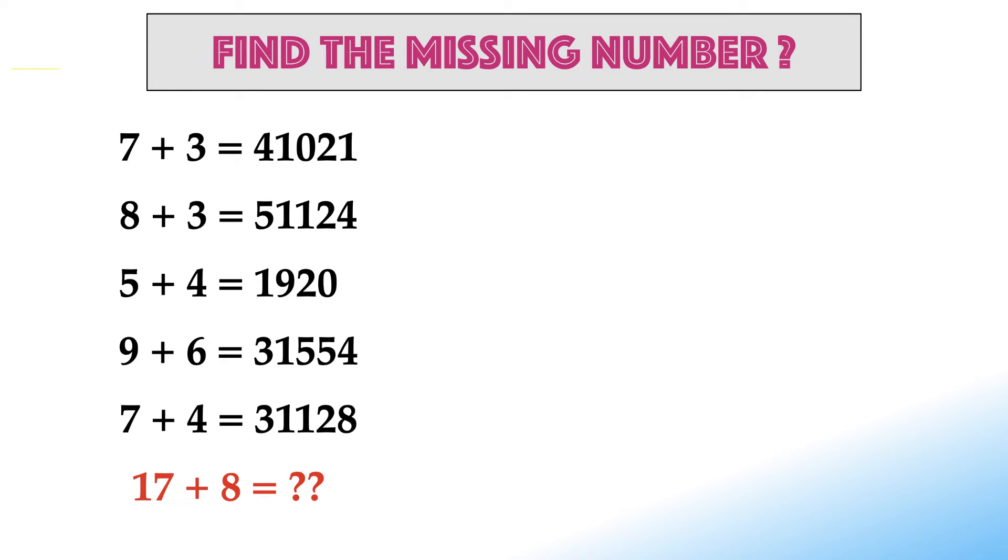Let me explain the solution now. If LHS is represented as A plus B, RHS can be broken down into three parts. The first part is the difference of two numbers. The second part is the sum of two numbers. And the third part is the product of two numbers. Let's validate this logic.